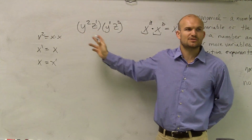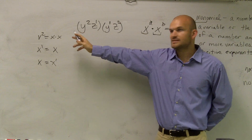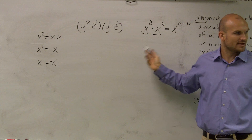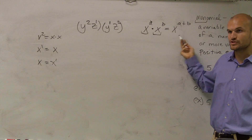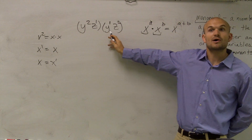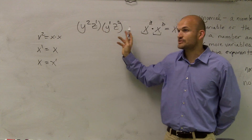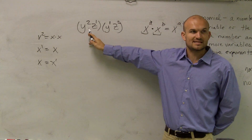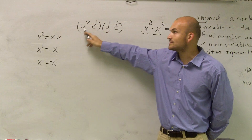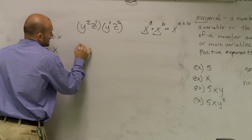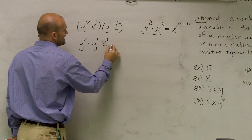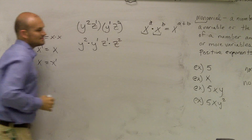So are my y and my z the same base? No, they're not the same, so I can't use this rule across them. But I do have a y multiplied by another y. A variable next to a variable is multiplication, and parenthesis next to a parenthesis is multiplication. So I'm multiplying y squared times y to the first, and I can rewrite this as y squared times y to the first, then the z's times z squared.